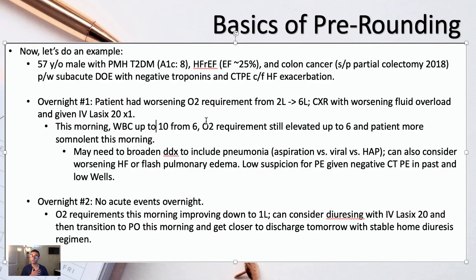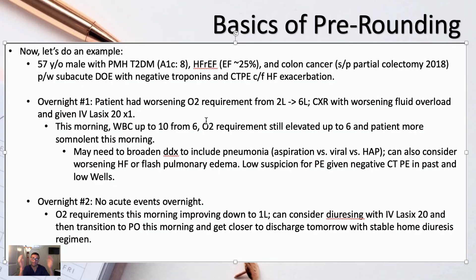I see that his white blood cell count is up to 10 from 6, his O2 requirement is still at six liters, and he's much more sleepy this morning. I'm already thinking: is this truly a heart failure exacerbation? If it is, the Lasix should have helped. Maybe we need more Lasix, but maybe we need to broaden our differential to also include pneumonia. If I think they have pneumonia, maybe I want to get a procalcitonin, blood cultures, and a repeat chest x-ray, and consider whether it's aspiration pneumonia or hospital-acquired pneumonia requiring coverage for pseudomonas.